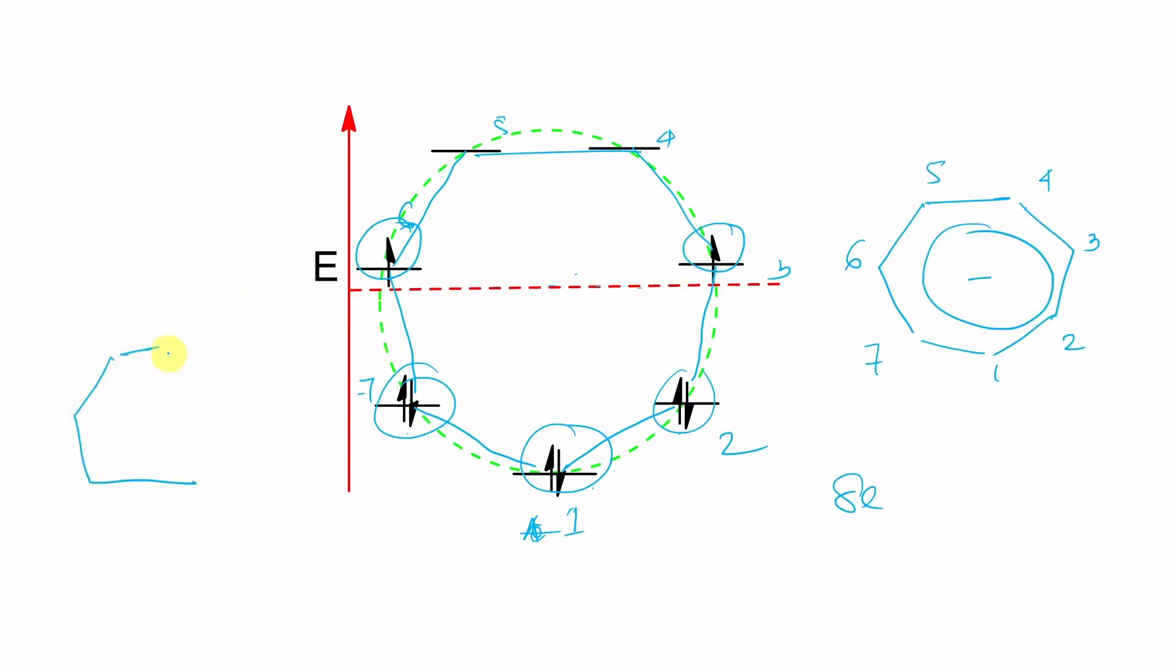Because if you look at the parent compound, that looks like this. This is actually cycloheptatriene anion. So 2, 2, 4, 2, 6 and 2, 8. So 8 pi electrons. And this is actually anti-aromatic.